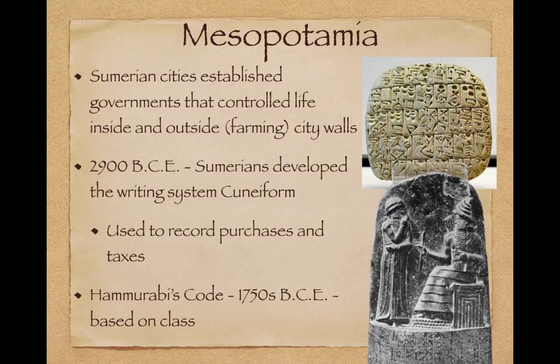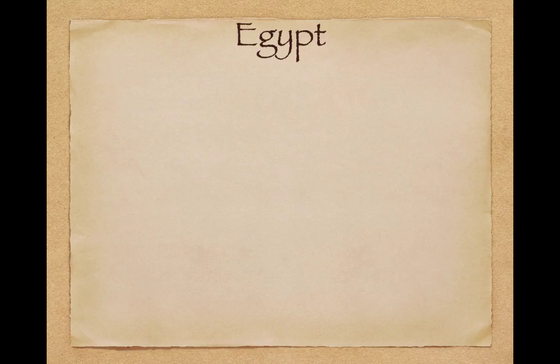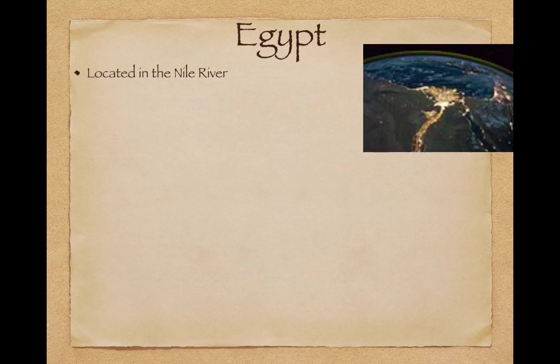Cuneiform was used to record purchases and taxes. Hammurabi's Code, from the 1750s BCE, is a system of laws based on class. We often think of 'an eye for an eye' with Hammurabi's Code, but it's a little more complex than that — we'll get into that in video number five. Jumping over to Egypt, located on the Nile River.